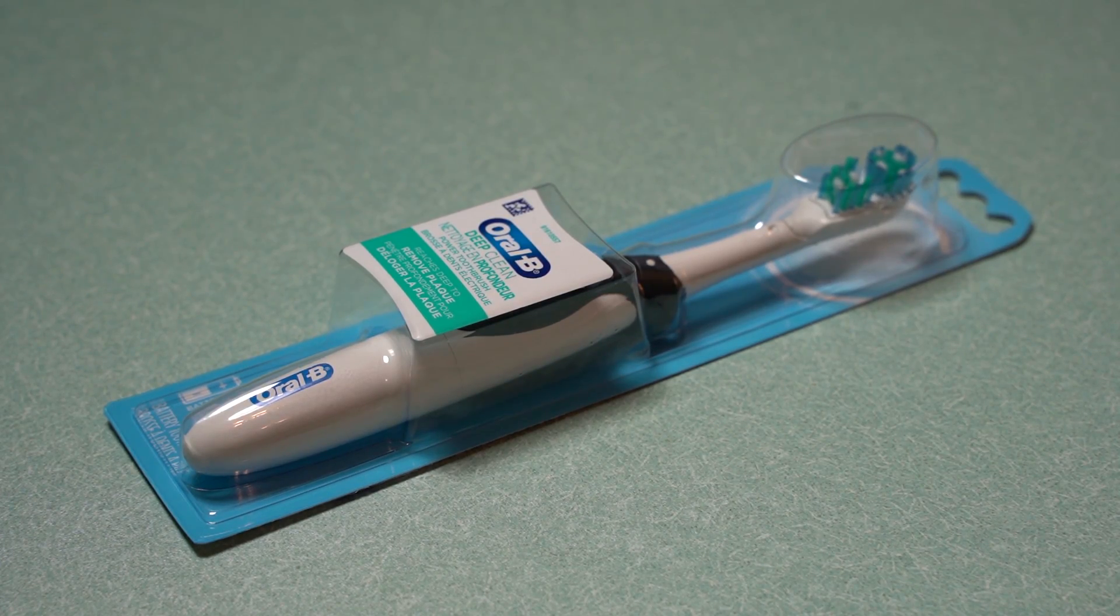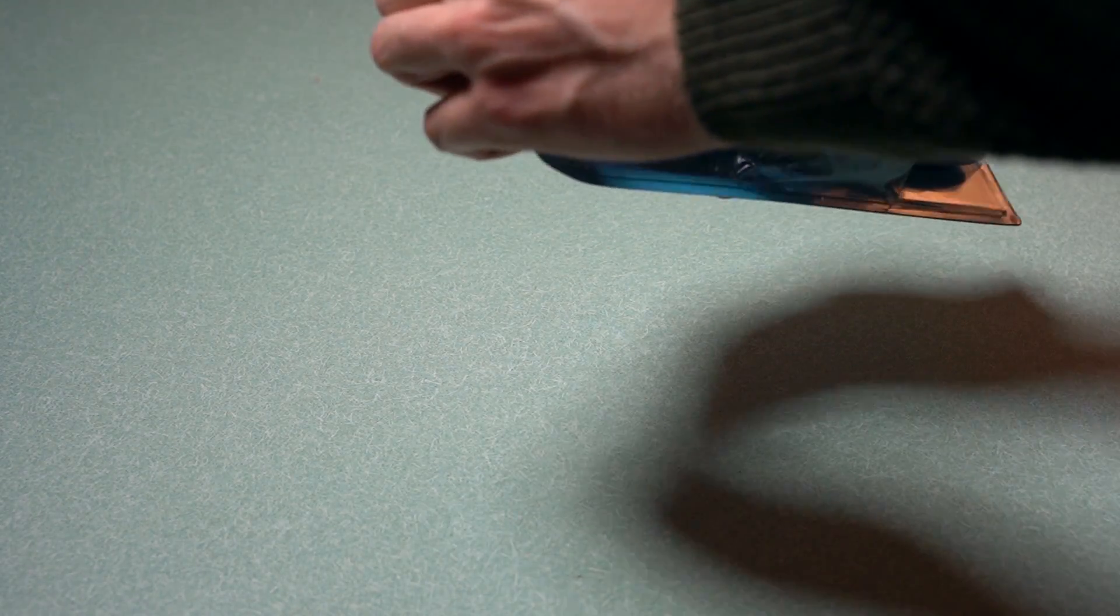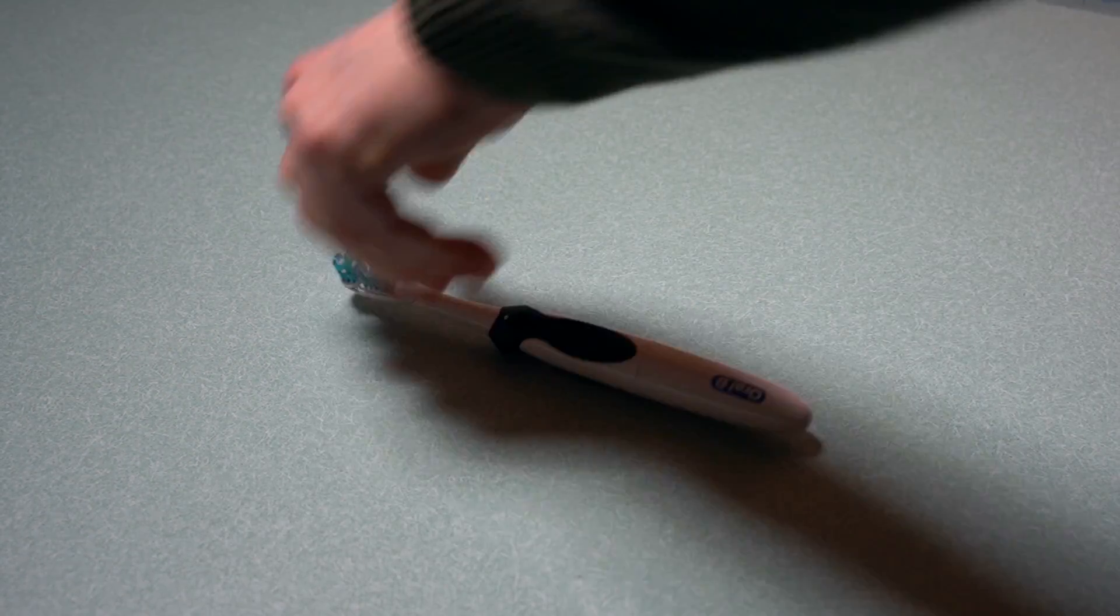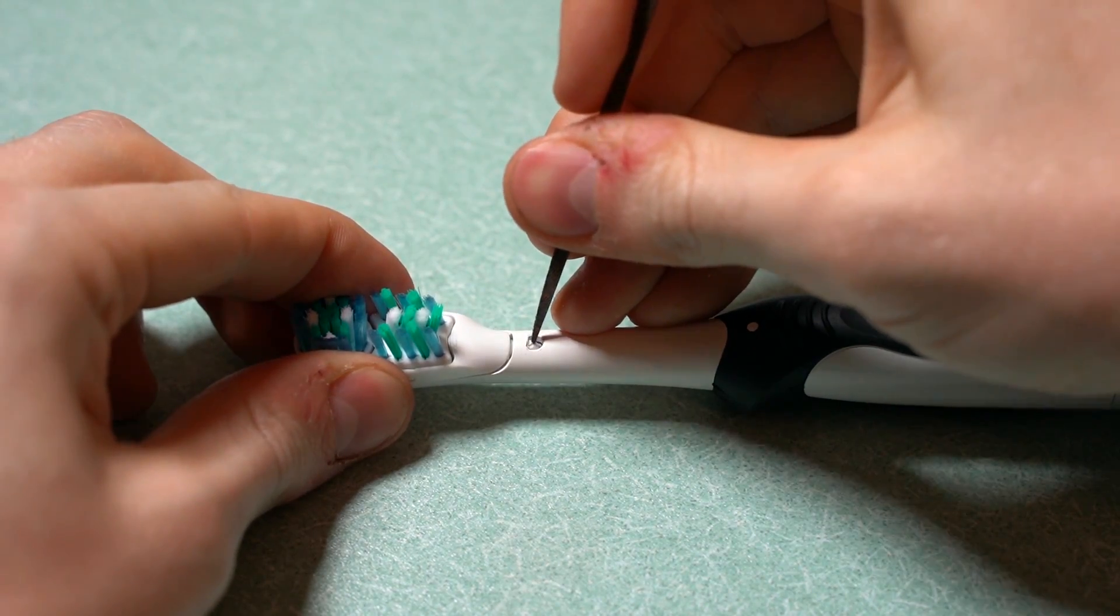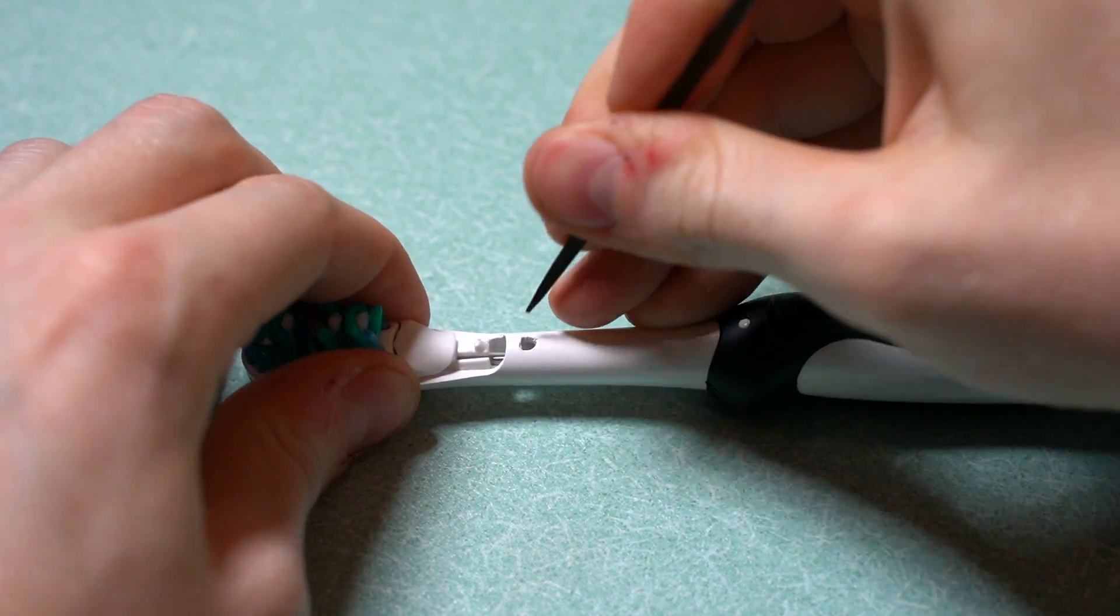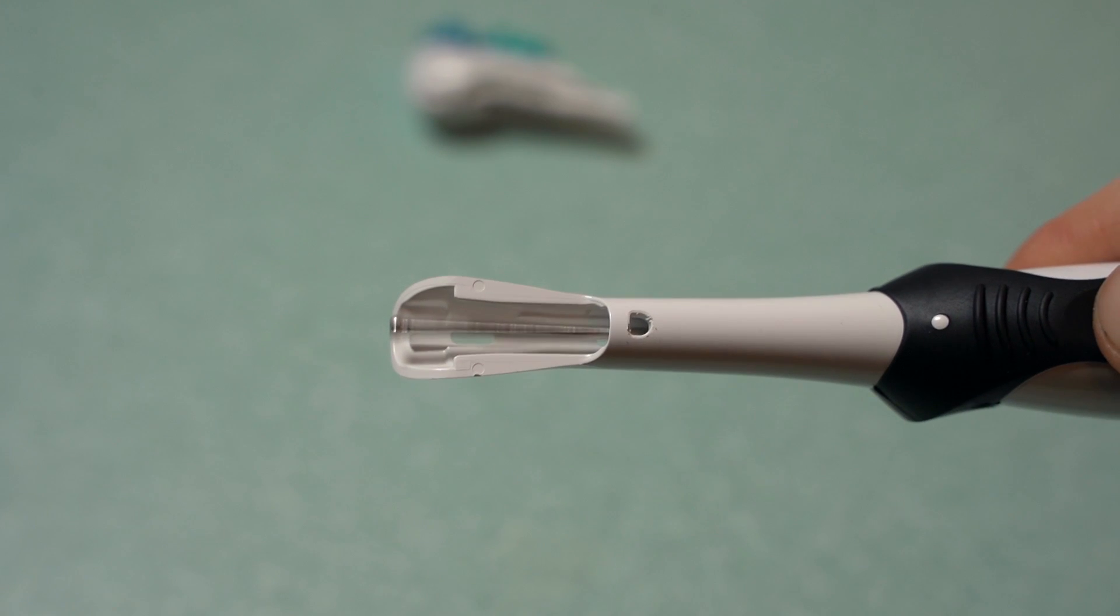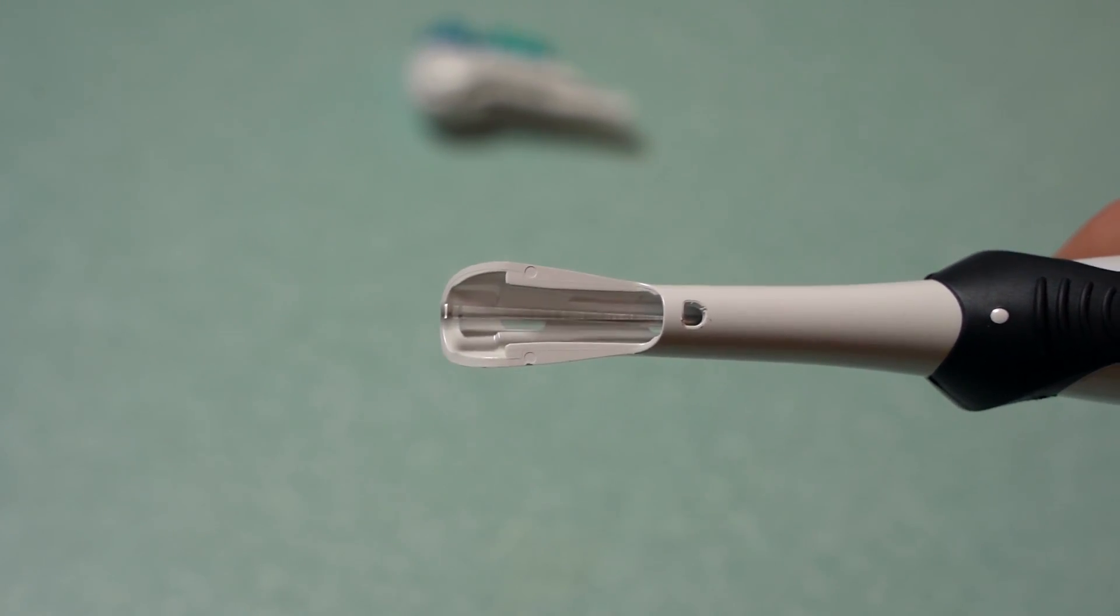The electric toothbrush used was an Oral-B Complete AA battery powered toothbrush. The head of the toothbrush is removed. The metal piece that vibrates when turned on will become the pick tip.